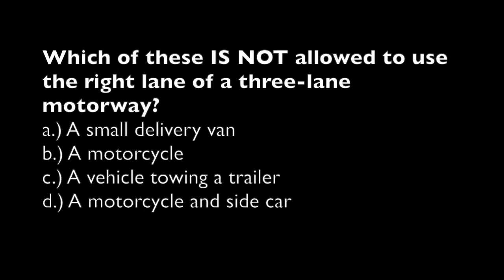Which of these is not allowed to use the right lane of a three-lane motorway? A. A small delivery van. B. A motorcycle. C. A vehicle towing a trailer. D. A motorcycle and sidecar.